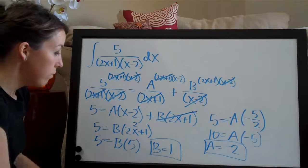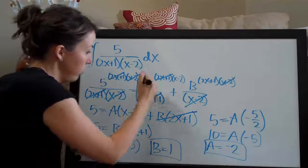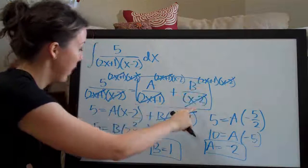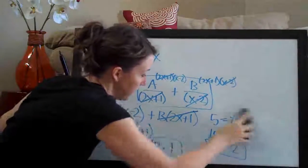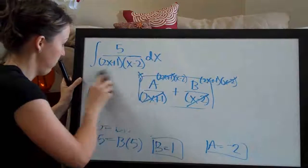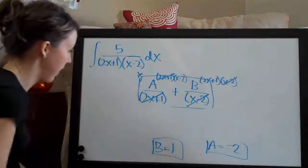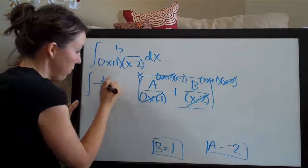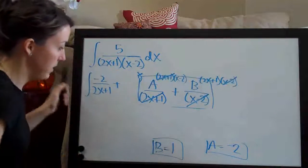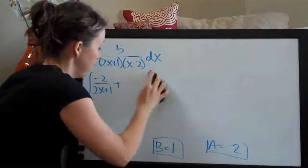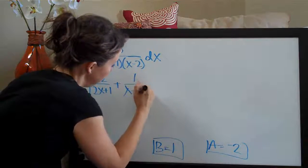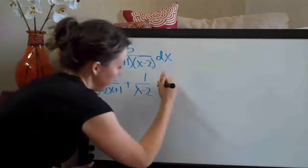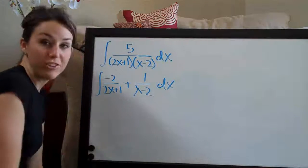Now that we have A and B, we plug them back into the partial fractions expression and put it back into the integral. So we have the integral of [-2/(2x+1) + 1/(x-2)] dx. Don't forget to add dx because it's proper notation whenever you have an integral. Now this is actually something we can take the integral of.